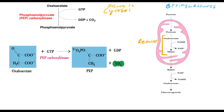PEPCK reacts with guanosine triphosphate (GTP) to phosphorylate oxaloacetate, because that's what kinases do — they phosphorylate. The carboxyl kinase grabs a phosphate group from the GTP and attaches it to the oxaloacetate, phosphorylating it.